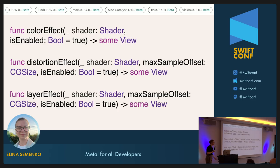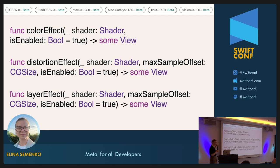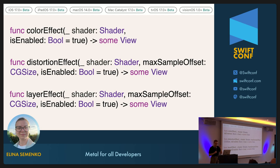With recent updates, SwiftUI now provides extensive integration with Metal shaders right at the view level — any view. We can manipulate colors, shapes, and many more parameters with optimized, smooth performance. To do that, we got a new shader structure and three new view modifiers. Note that this is available only from iOS 17 and macOS 14, which is a bit of a bummer — my MacBook from 2017 doesn't support macOS 14, so I had to run the code on my iPhone instead. Just keep that in mind.